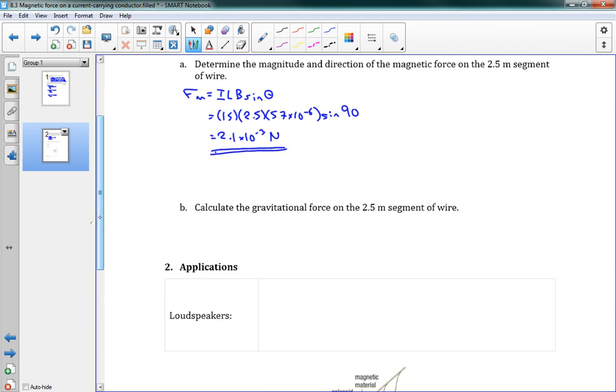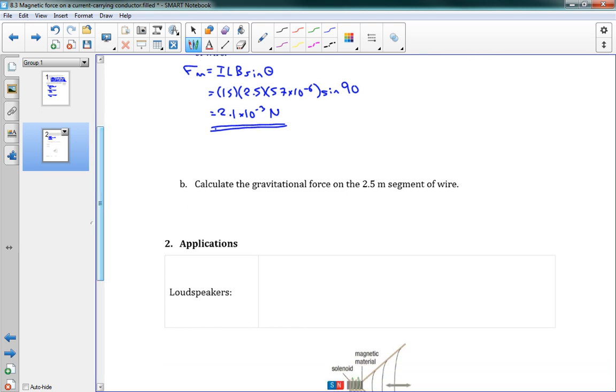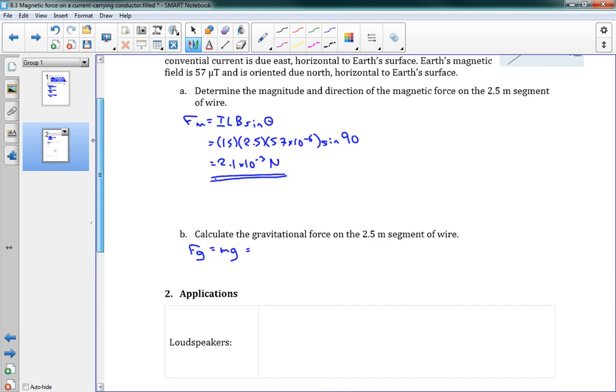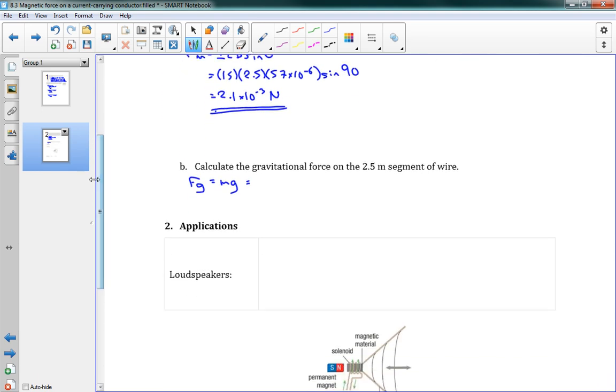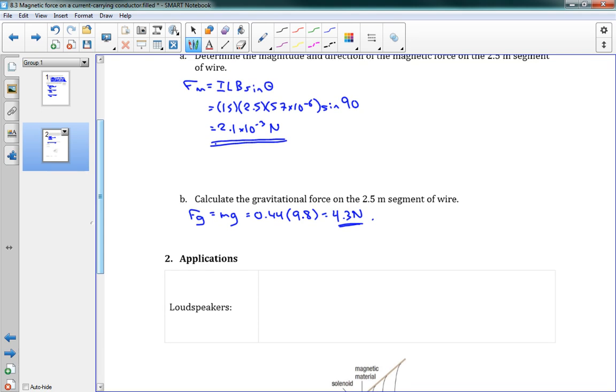The next one says calculate the gravitational force on this thing. Well, this is, again, this is nothing new. You know how to do this. This Fg is equal to mg. We had our mass was .44 kilograms, 9.8. This gives us 4.3 newtons. And the reason this is here is just to show you that we keep on saying magnetic force is so much larger than gravitational. Well, in this case, the magnetic force is quite a bit smaller than the gravitational force. So it always, of course, depends on the situation.